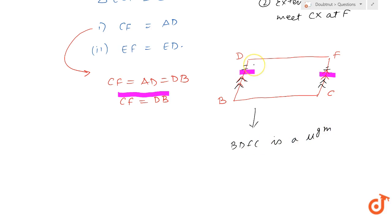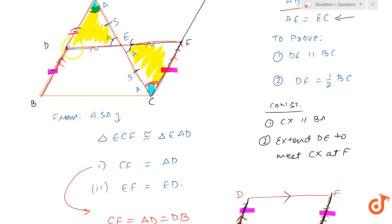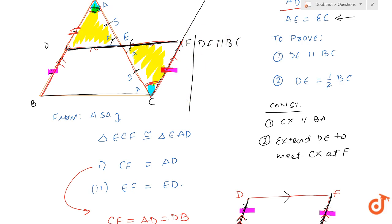Since this pair of opposite sides are equal and parallel, and if BDFC is a parallelogram, then it means that DF is parallel to BC. And since DF is parallel to BC and E lies on DF, I can also say that DE is parallel to BC. So this is my first part proved.